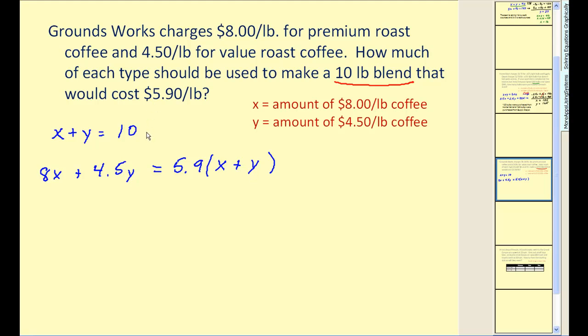Now to solve this system, I am going to use the substitution method, and what I'm going to do is solve this equation for x. I'll subtract y on both sides. Now let's rewrite this equation performing substitution. We would have 8 times x, which is 10 minus y, plus 4.5y, must equal 5.9 times x plus y. But we can save some time if we recognize that x plus y does equal 10, so we'll replace this with 10. We have one equation with one unknown, so we now just have to solve this equation and we'll have y.